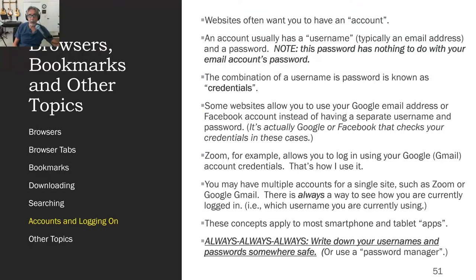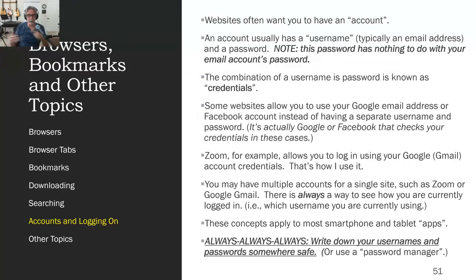One of the problems with some of these newer systems is you may have multiple accounts. For example, when I go to Amazon, Bonnie has an account and I have an account. So when I go to buy something and say 'check out,' it's going to ask me, well, who are you — are you David? Are you Bonnie? If you have multiple accounts for a single site like Zoom or Gmail, you need to find out which account you're currently using.